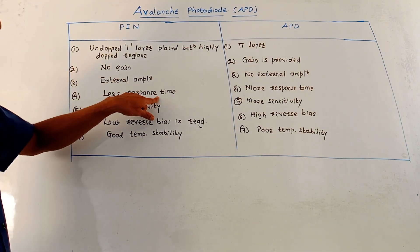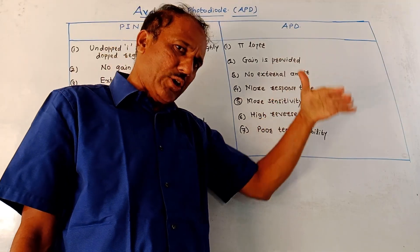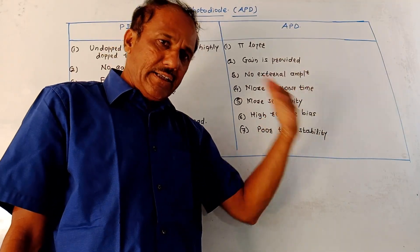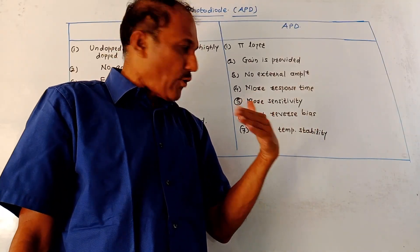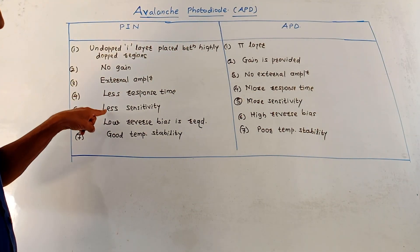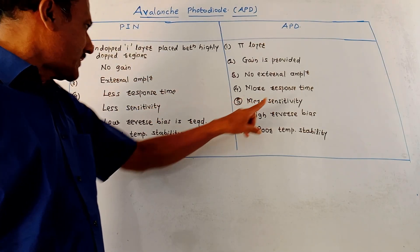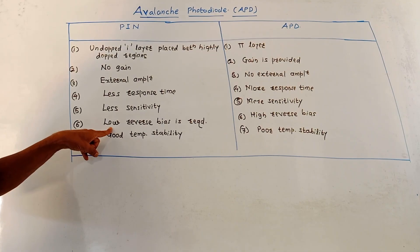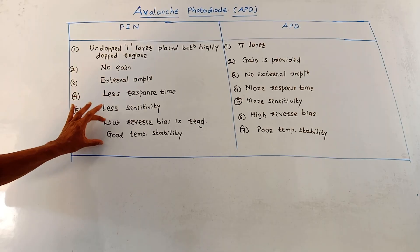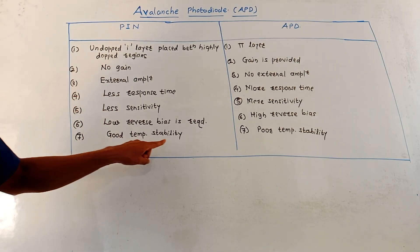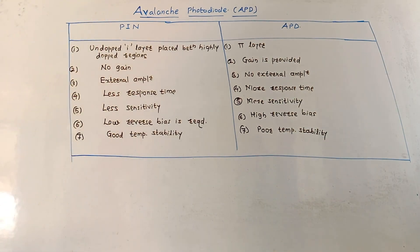Next, PIN photodiode has less response time, whereas more response time is required for APD because secondary or newly generated charge carriers have to be generated. Next, less sensitivity for PIN diode and more sensitivity for APD. Then for PIN diode, low reverse bias is required, whereas for APD, high reverse bias is required. And PIN photodiode shows good temperature stability, whereas APD shows poor temperature stability.